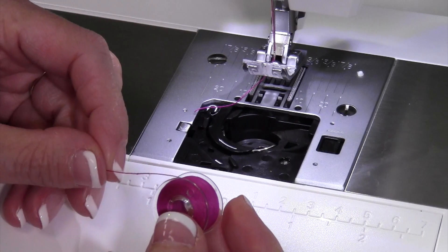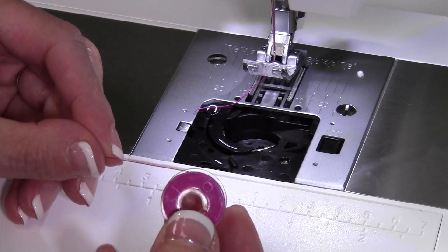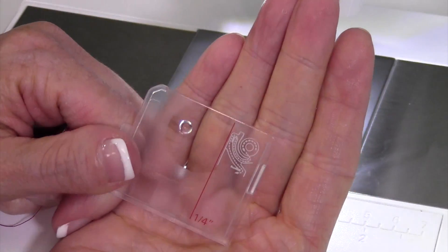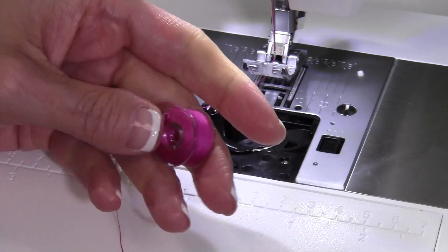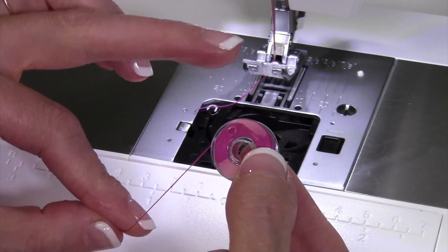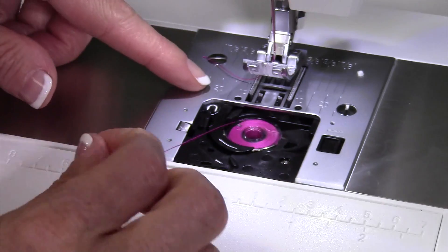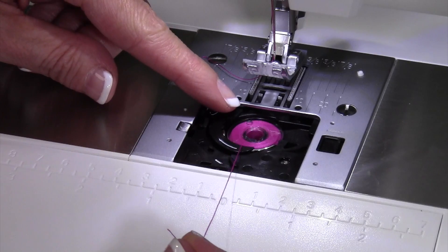The Pfaff Passport 3.0 has a super easy way to put the bobbin in. If you forget, there's a little picture on the door. The key is that you always put the bobbin in so the thread is coming off the left side of the bobbin. When you drop it in, it'll look like it's spinning counterclockwise.